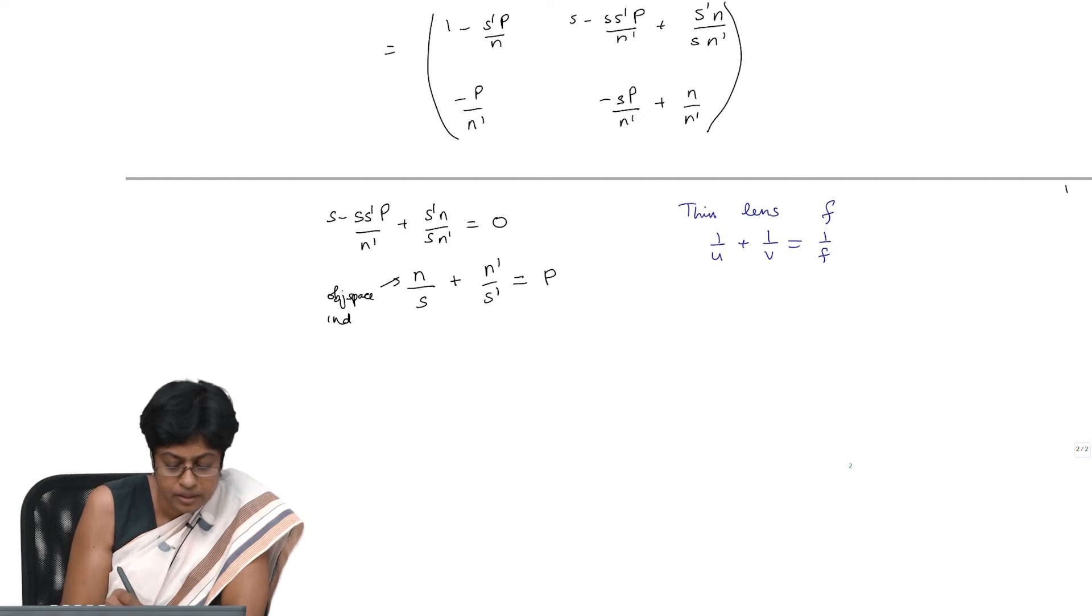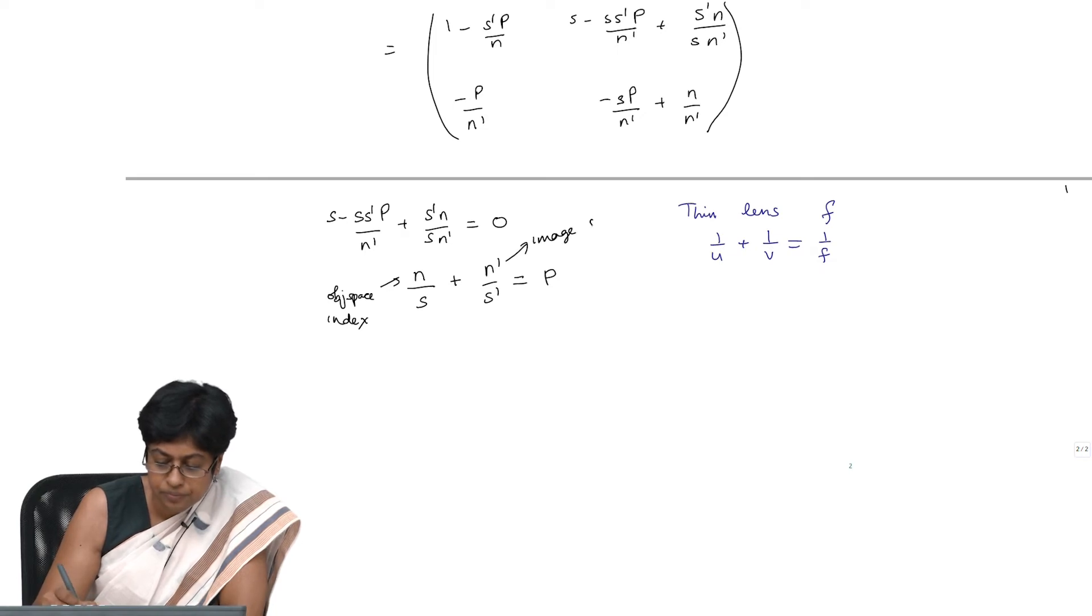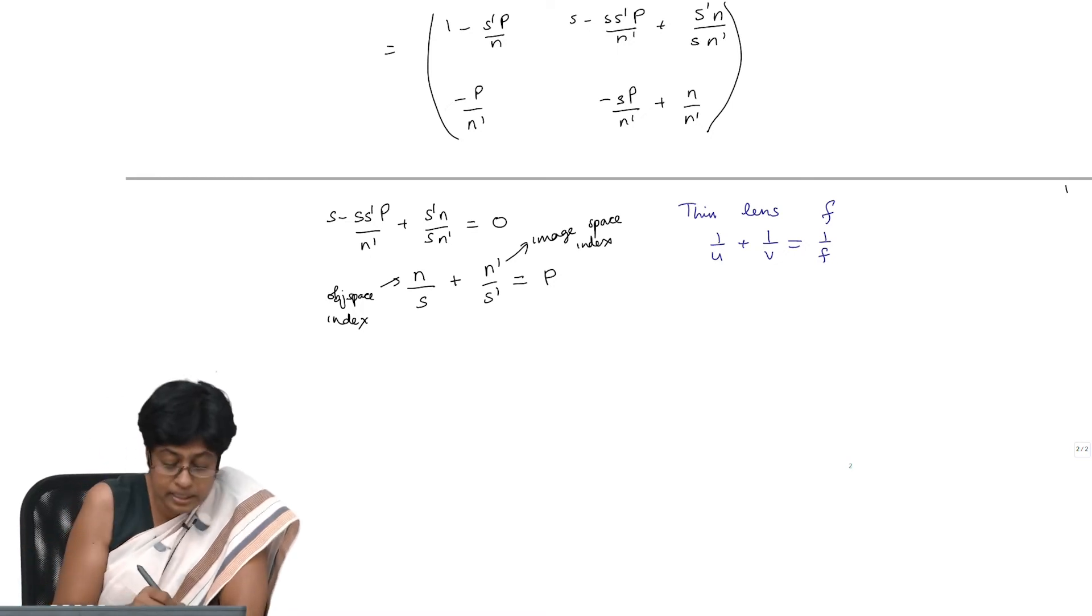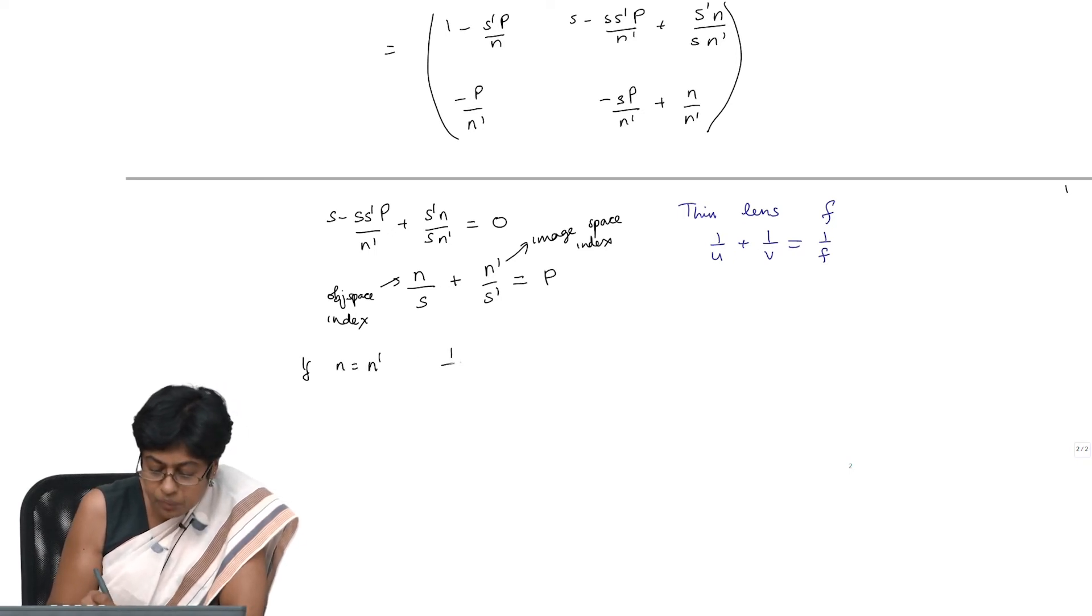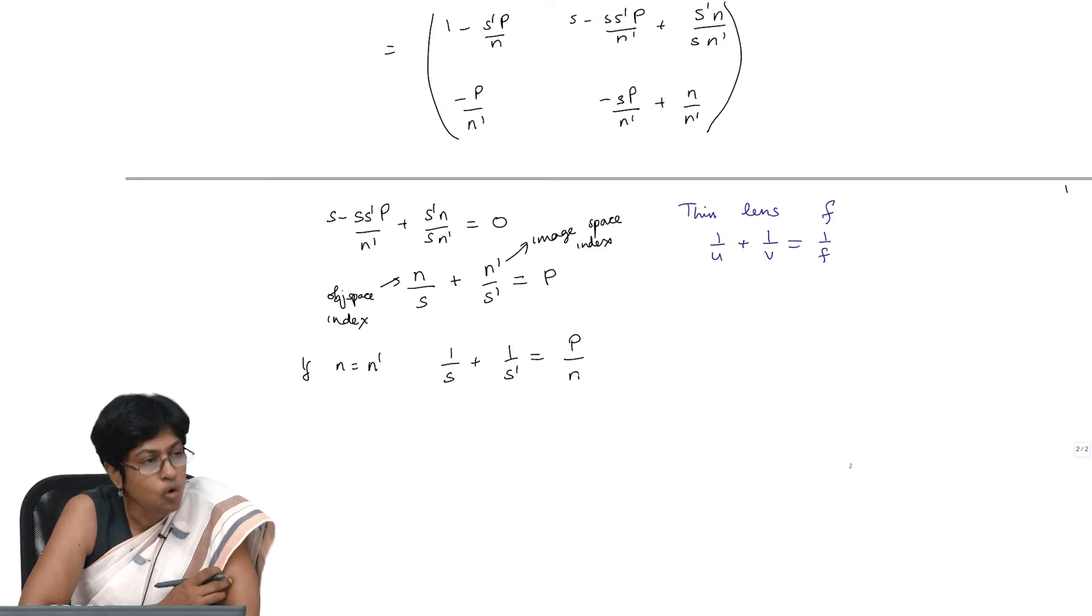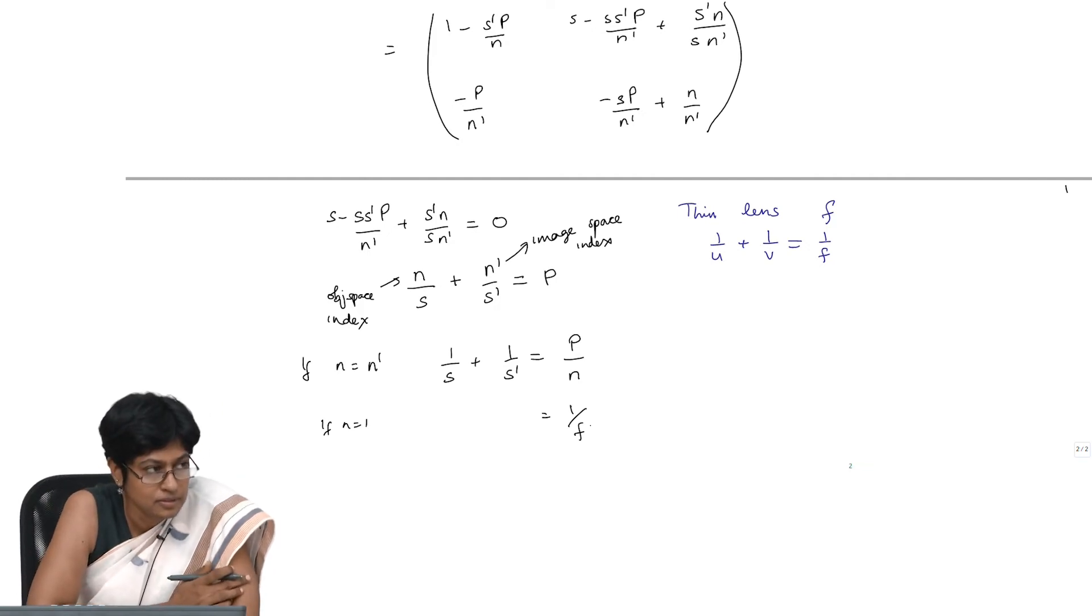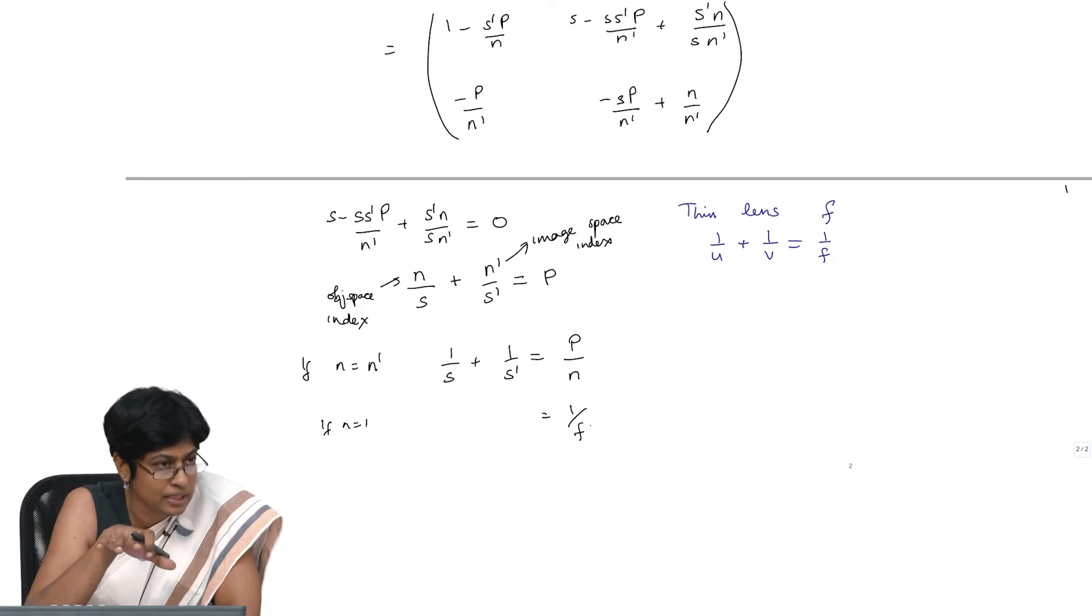N is the index of the object space, this is of the image space. If I assume they were equal, so let us say if N was equal to N dash, then I would have 1 over S plus 1 over S dash is P by N, or if they were equal to 1, I would just have—if N were equal to 1, then this would just be 1 by f. And you have exactly what we expected to get: you have an imaging equation. But remember, what did we start with? We have not used a thin lens anywhere in this, yet we have an imaging equation that looks identical to the equation of imaging for a thin lens. This is a really powerful result.